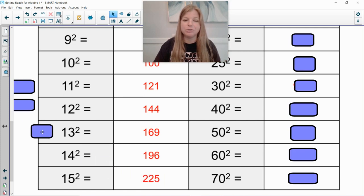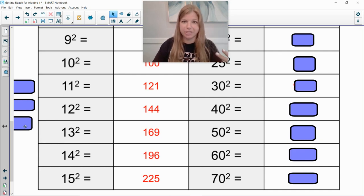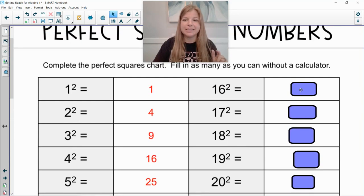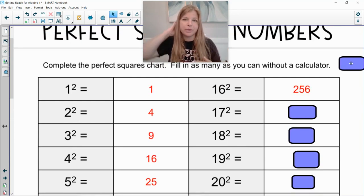15 squared is 225. Okay so we have 169, 196, 225. And I'm going to scroll back up here. 16 squared is 256. Okay so after the first 12 the next 4 go 169, 196, 225, 256. It sort of rhymes. Okay bear with me.